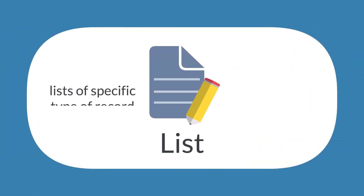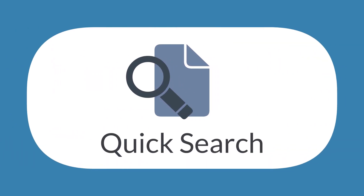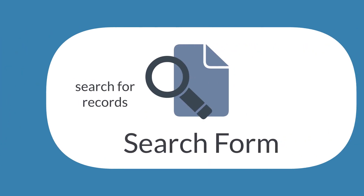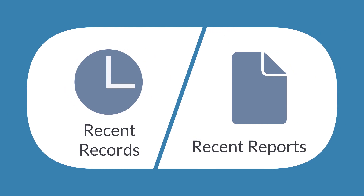Similarly, the list portlet shows lists of a specific type of record along with links to access those records. QuickAdd allows you to easily create new records in a specific record type, while QuickSearch allows you to easily search for a specific record within a record type. The search form portlet is similar to QuickSearch, but it has more advanced search capabilities. The last two shortcuts portlets are recent records and recent reports, which provide links to the records and reports that you have recently accessed to create, view, or edit.